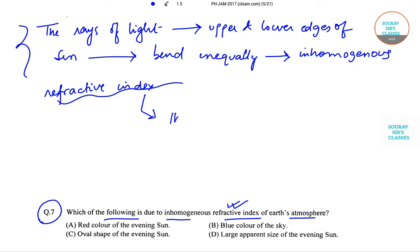And a consequence of this, that means due to unequal bending of light, the image of sun appears oval and larger in size. That means the correct answer will be option number C.